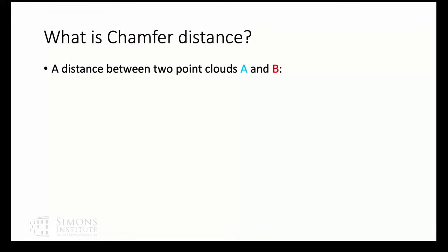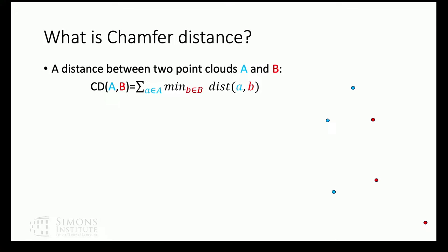The chamfer distance from set A to set B is the sum over all points in A of their distances to their nearest neighbor in B. It's a very natural notion. A very similar definition is the Hausdorff distance, where the only difference is that the sum is replaced by a max.